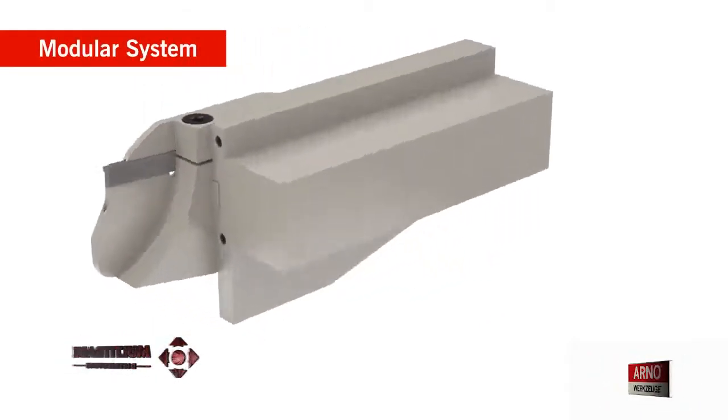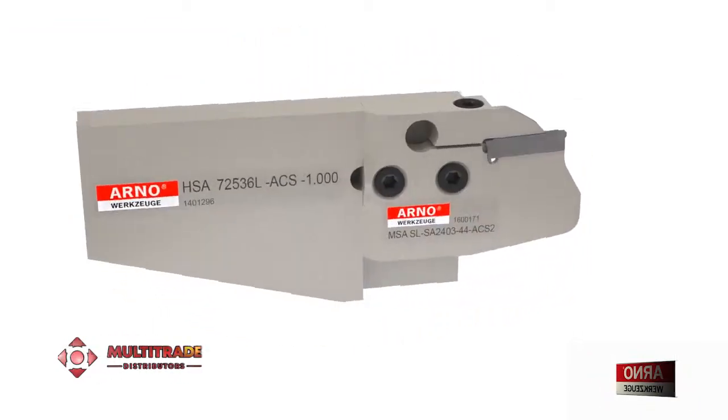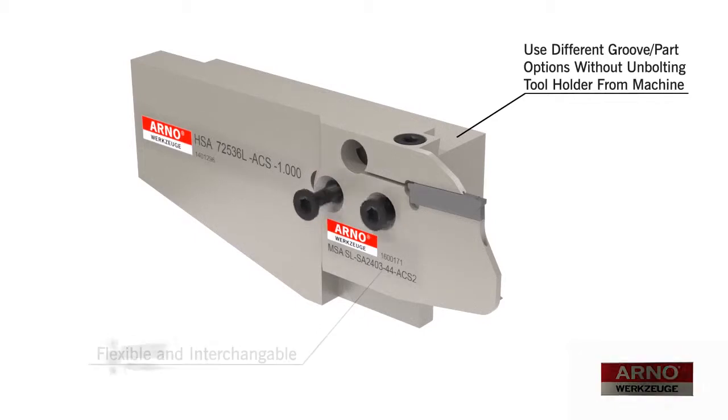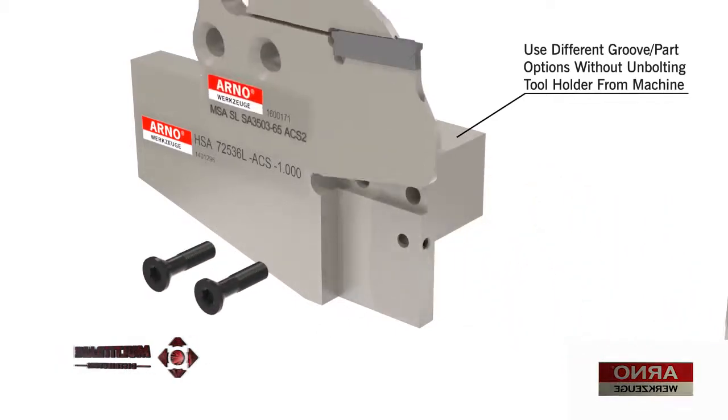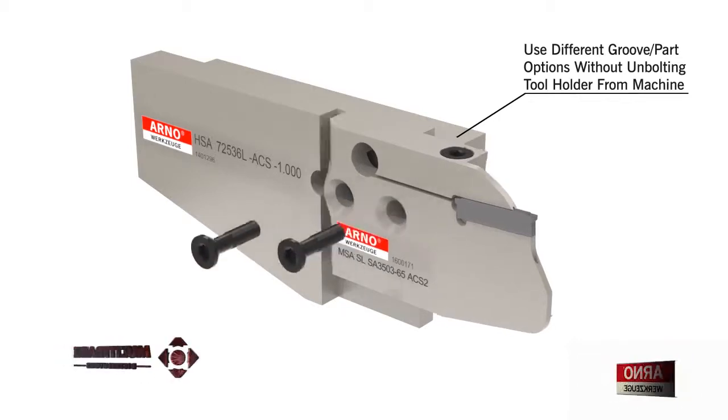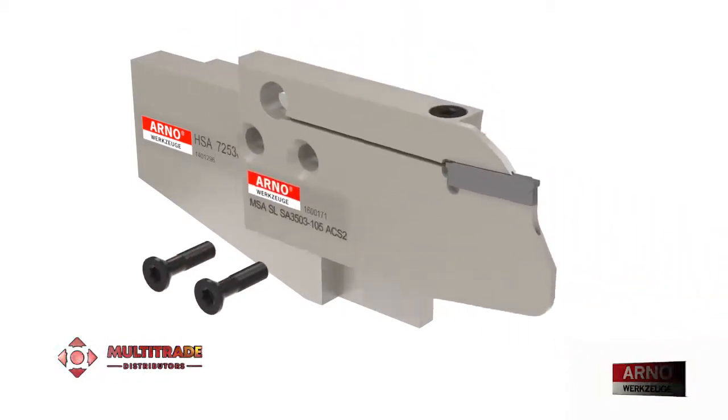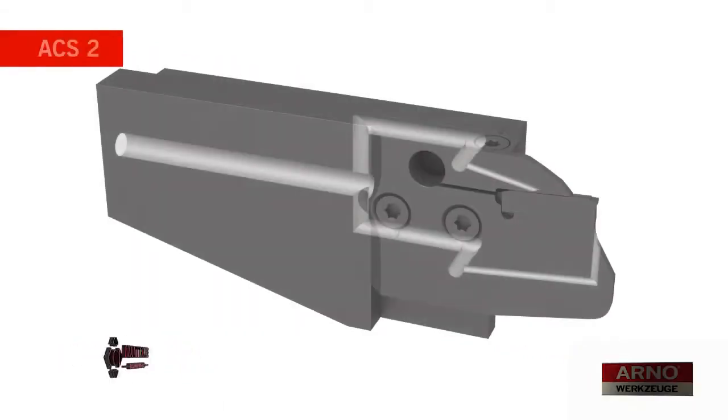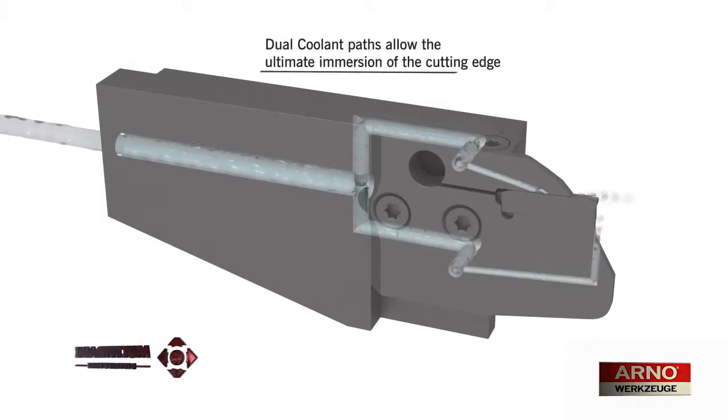To further enhance flexibility, Arno offers a modular system that allows you to switch to different parting and grooving options, or change damaged blades without having to disassemble your setup. This is perfect for both high-volume production setups and small-lot production setups with varying grooving and parting requirements. The modular system also features the ACS-2 through-coolant system for all blade options.